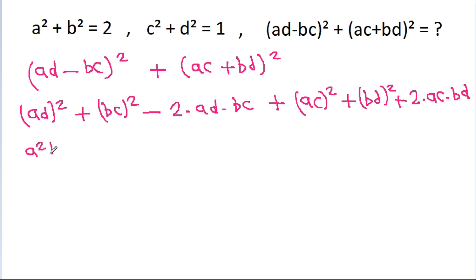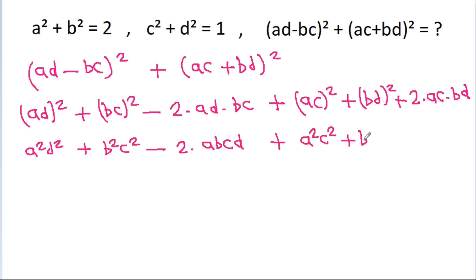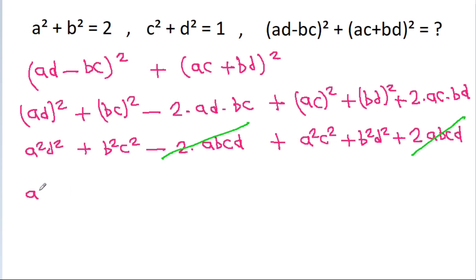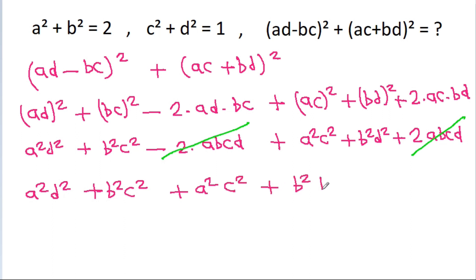And it is a square d square plus b square c square minus 2 times ad into bc, which is abcd, plus a square c square plus b square d square plus 2 times ac into bd, which is abcd. And minus 2abcd and plus 2abcd will get cancelled. And it is a square d square plus b square c square plus a square c square plus b square d square.